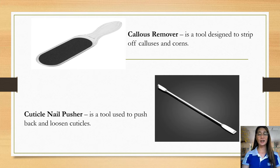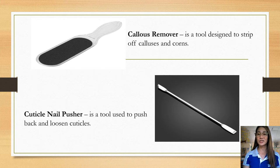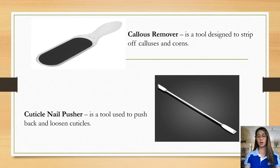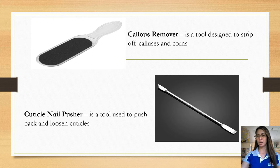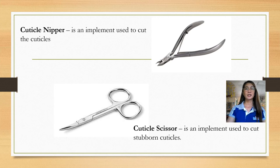The callus remover is a tool designed to strip off calluses and corns on the feet. The cuticle nail pusher is a tool used to push back and loosen cuticles.